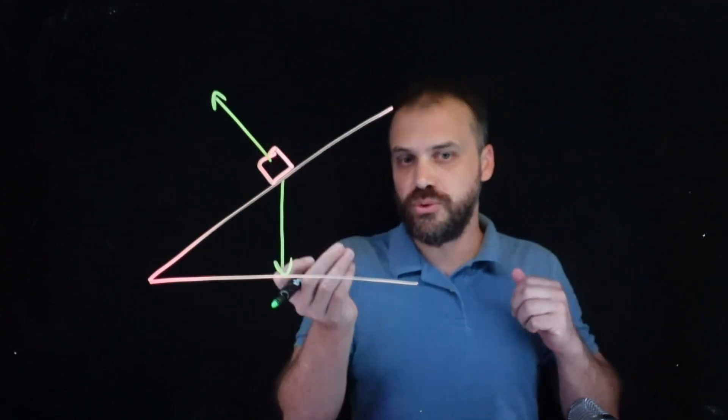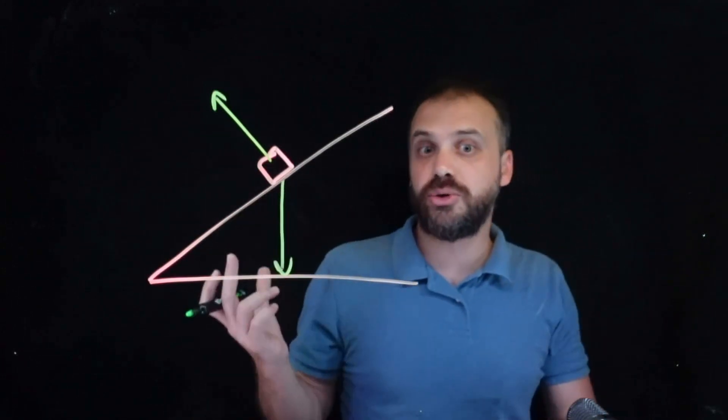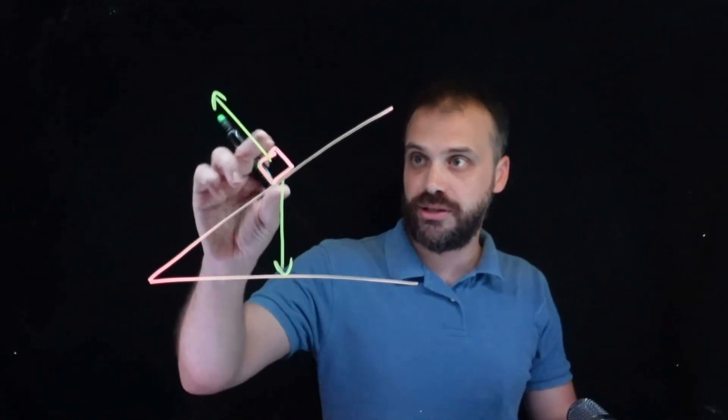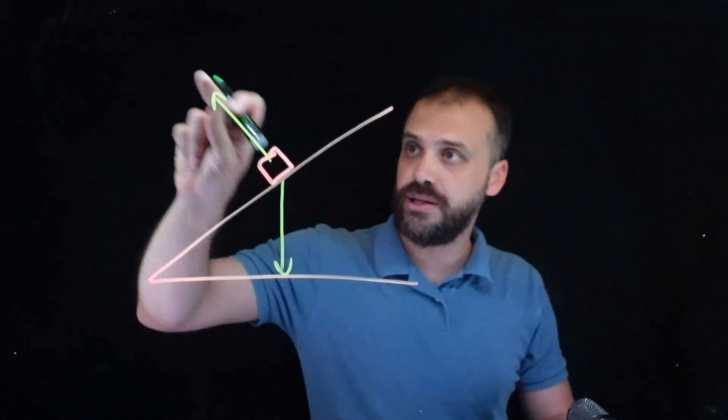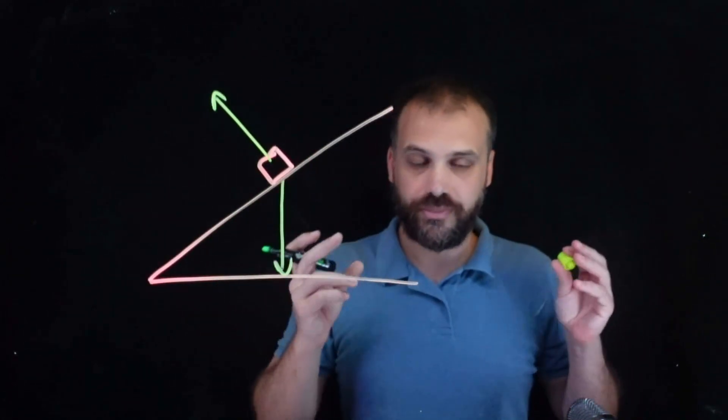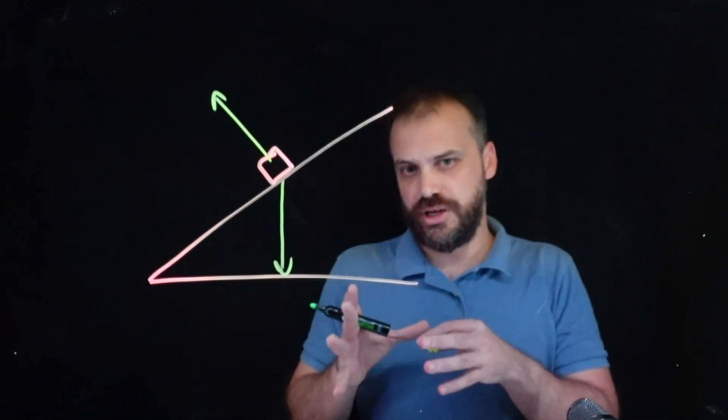Because we're supposed to have a force and an equal and opposite force. These are not equal and opposite. This one's not going straight up, this one's going straight down. This one's not going that way. That is a problem. So how do we overcome this? Well, it's relatively straightforward.